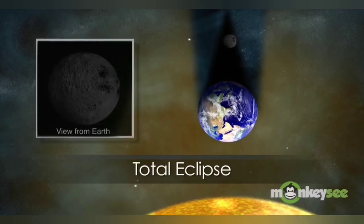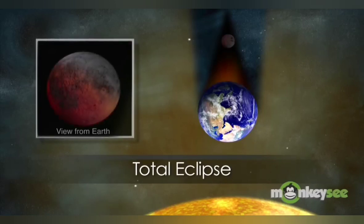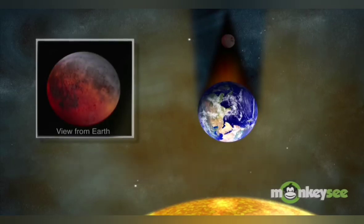In a total lunar eclipse, the Moon is entirely within the Earth's umbra, casting a shadow across its full visible surface. But even in a total eclipse, the Moon remains faintly illuminated by indirect sunlight refracted through the Earth's atmosphere, giving the Moon a faint red glow.